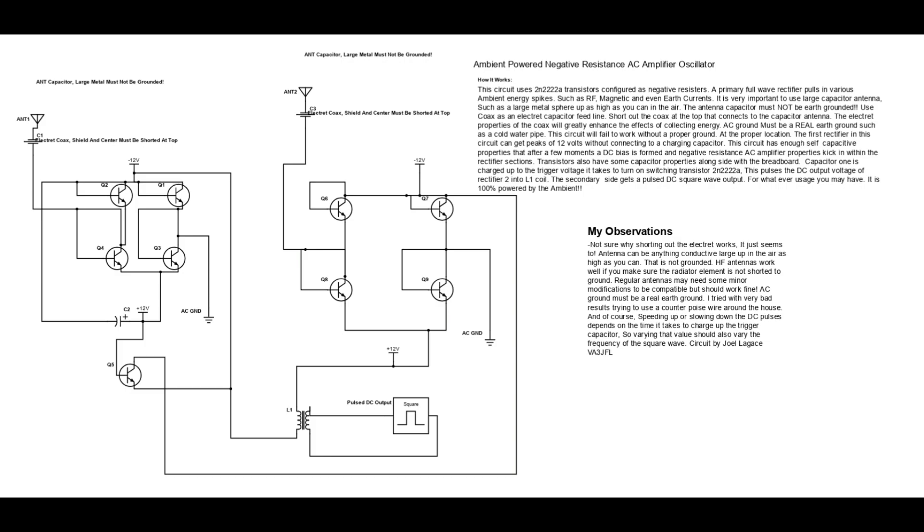Transistors also have some capacitor properties alongside with this breadboard. Capacitor 1 is charged up to the trigger voltage it takes to turn on switching transistor 2N222A. This pulses the DC output voltage of rectifier 2 into L1 coil.